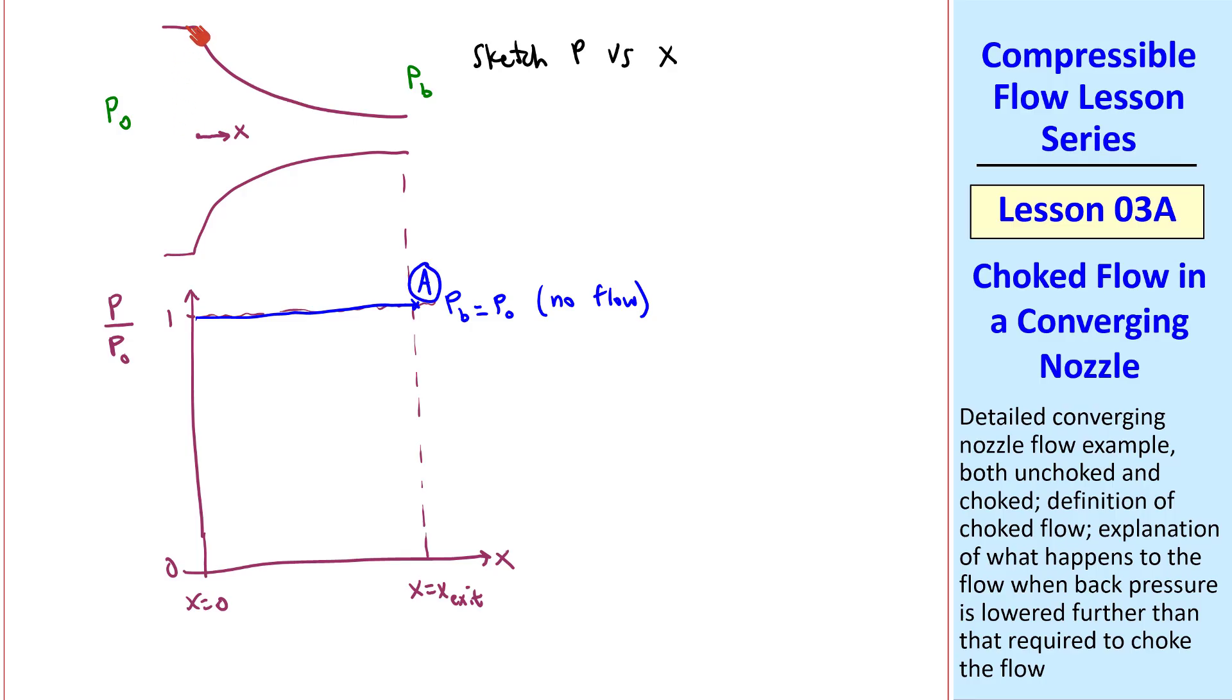I'm going to assume that this entrance is so large that P at X equals 0 is equal to P-naught. So case B is where P-naught is greater than Pb, but Pb is greater than P-star. The pressure ratio will look something like this. This is subsonic everywhere, as in our example problem, since the back pressure is not small enough to make the flow sonic at the throat.